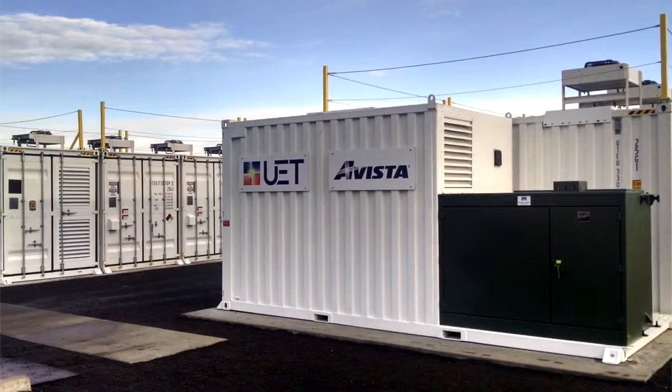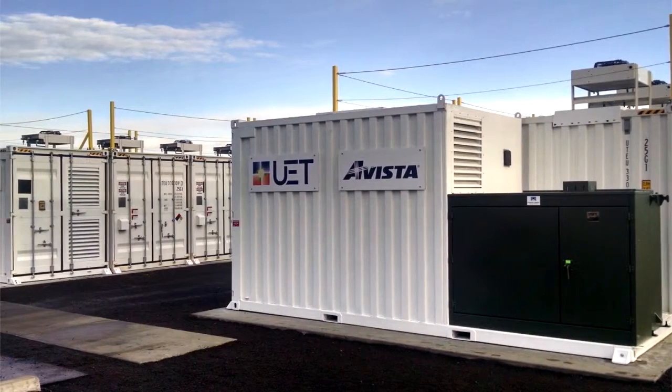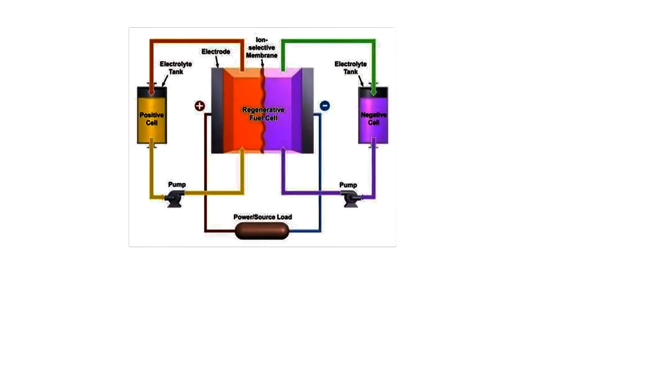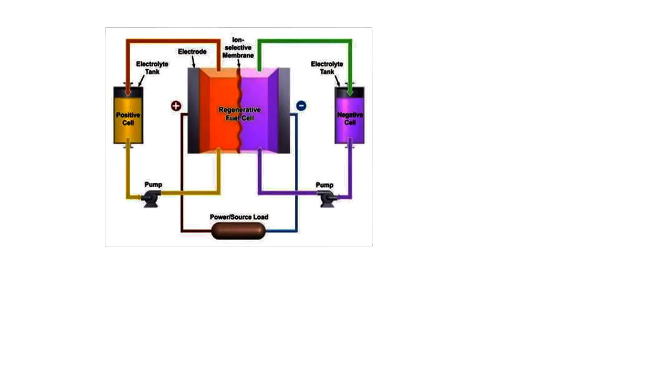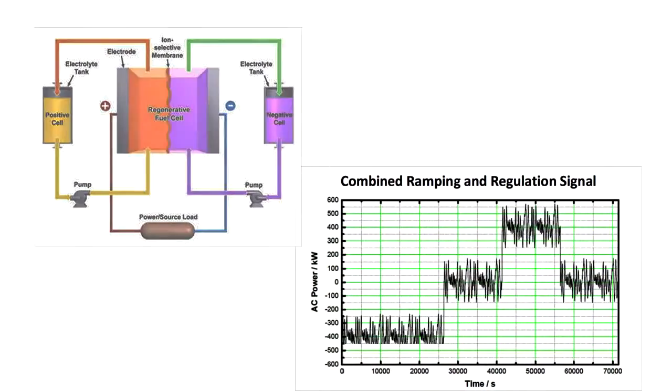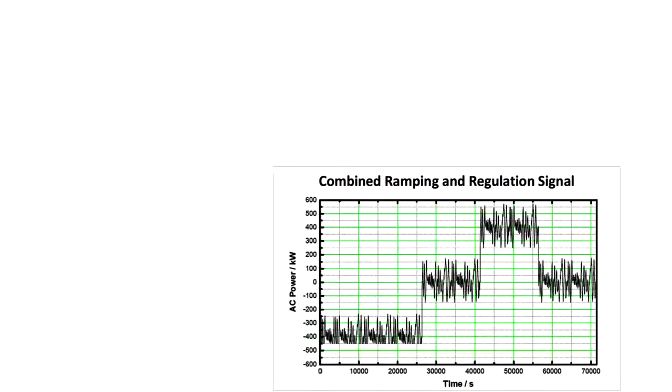Utilities will charge large customers, commercial customers, based on what the highest amount of power they were using at any given moment in a month. So if you can use a battery, you can shave that peak — basically buy at night and then discharge the battery during that peak. You can save that amount of money.